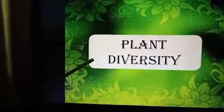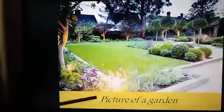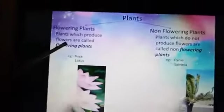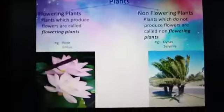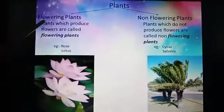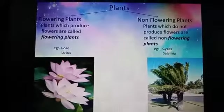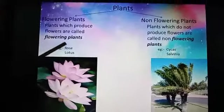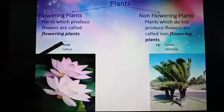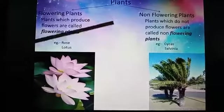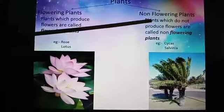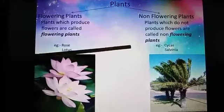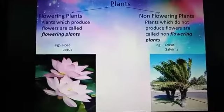Plant diversity. This is a picture of a garden. Plants can be divided into two groups: flowering plants and non-flowering plants. Plants that produce flowers are called flowering plants. Example: rose and lotus. Plants that do not produce flowers are called non-flowering plants. Example: cypress and salvenia.